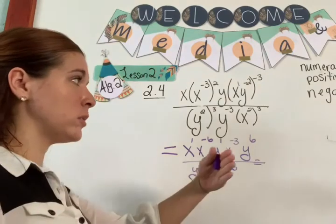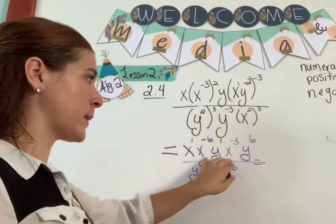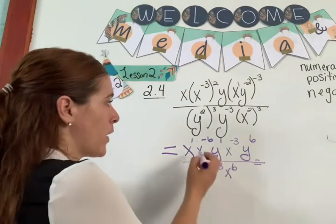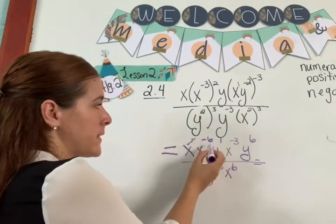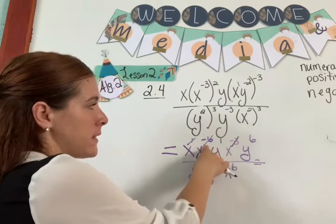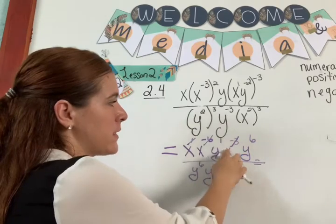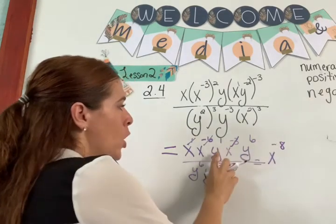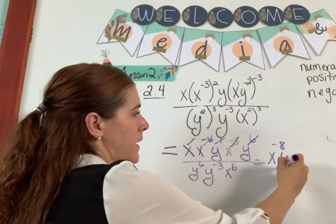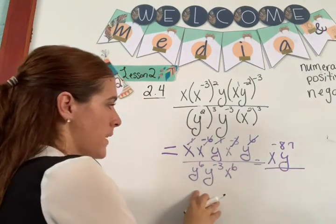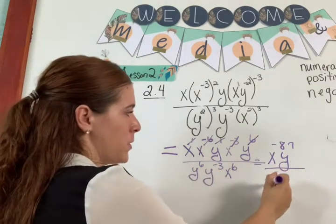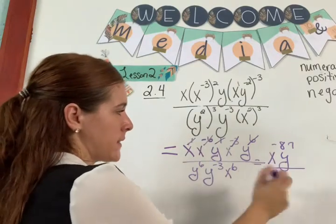Now let's combine them first, then put them all into the numerator. You have 1 plus negative 6 plus negative 3: 1 minus 6 is negative 5, and negative 5 plus negative 3 is negative 8. So x to the negative 8. y to the 1 plus 6 is y to the 7. Down here, y to the 6 plus negative 3 is y to the 3rd. And you have x to the 6.